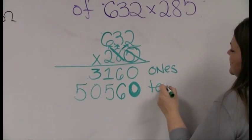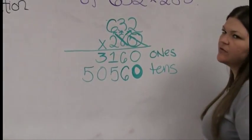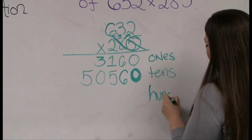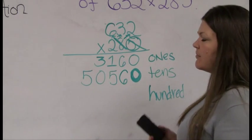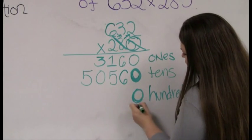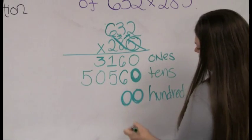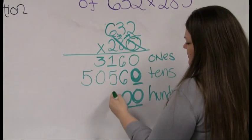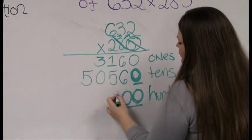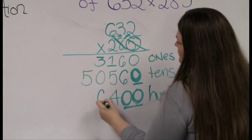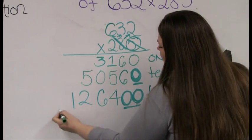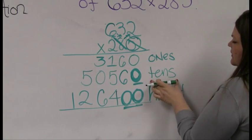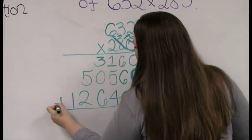Notice the 2 is in the hundreds place — so it's really 200. How many zeros does 200 have? Two of them. So I plop down two zeros, and my answer starts in the hundreds column. 2 times 2 is 4. 2 times 3 is 6. 2 times 6 is 12. There wasn't even any carrying. Now I add together the answers from the ones place, the tens place, and the hundreds place.